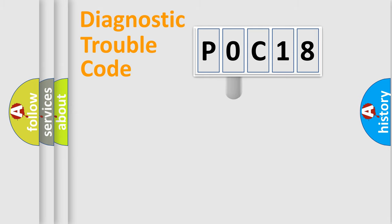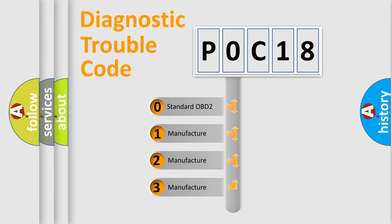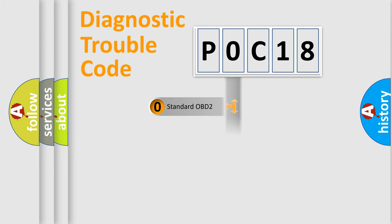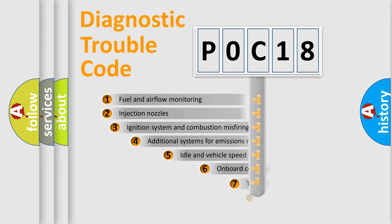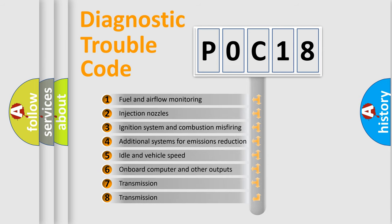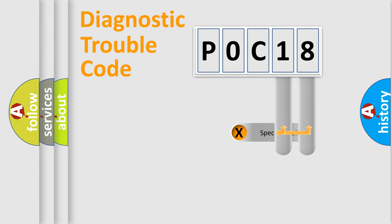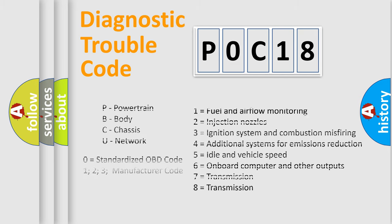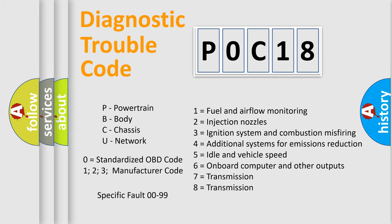This distribution is defined in the first character of the code. If the second character is expressed as zero, it is a standardized error. In the case of numbers 1, 2, or 3, it is a more specific expression of a car-specific error. The third character specifies a subset of errors. The distribution shown is valid only for the standardized DTC code. Only the last two characters define the specific fault of the group. Note that such a division is valid only if the second character is expressed by the number zero.